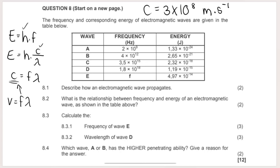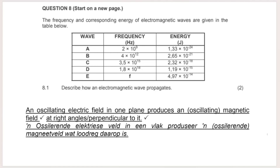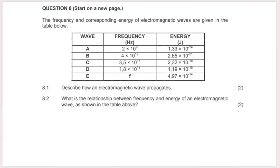Describe how an electromagnetic wave propagates: an oscillating electric field in one plane produces a magnetic field that is perpendicular (90 degrees or at right angles) to it — that is how it propagates. It also travels through a vacuum. This is theory work that you need to learn.